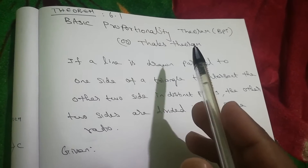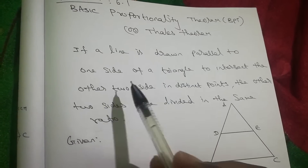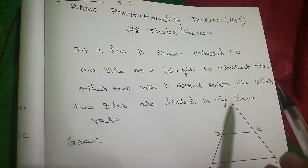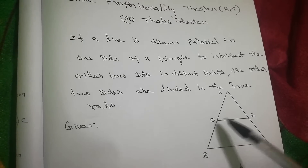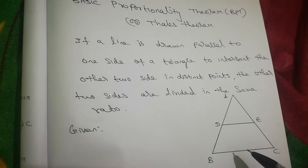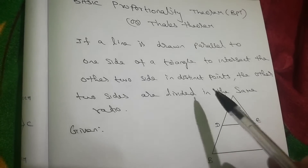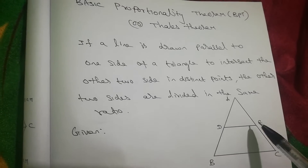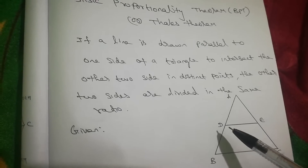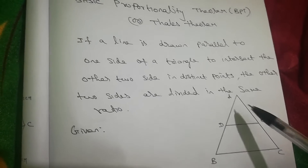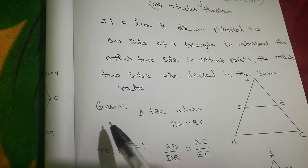Theorem 6.1: Basic Proportionality Theorem (BPT). See the statement: if a line is drawn parallel to one side of a triangle to intersect the other two sides in distinct points, then the other two sides are divided in the same ratio. So if the two points D and E are distinct, these two ratios AD/DB and AE/EC are equal.